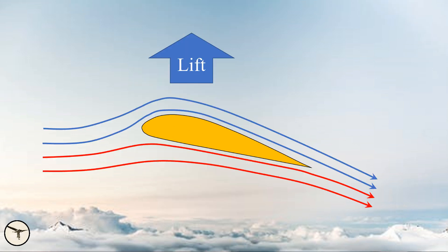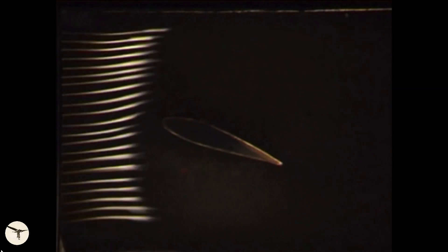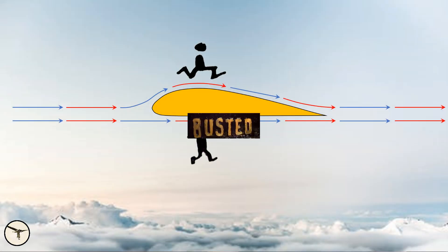But the air parcels are not married, they are divorced by the wing. And since we are not dealing with quantum physics, they cannot know where the other is. Wind tunnel demonstrations show that the air flowing over the wing moves much faster than the air flowing under the wing. Busted.